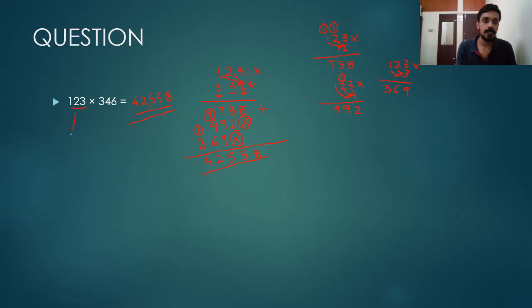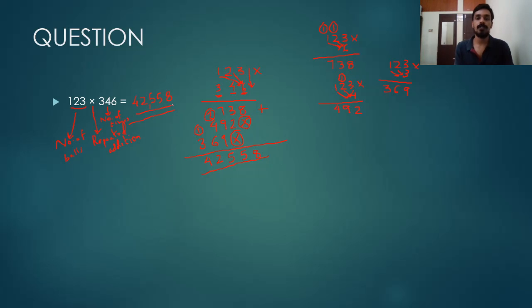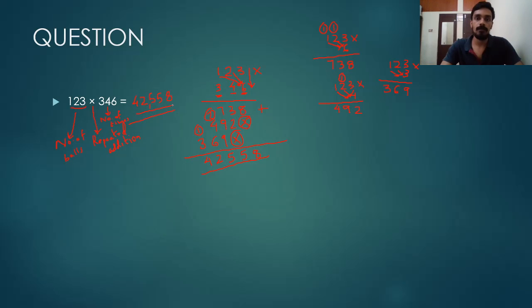So 123 is the number of balls. When we do repeated addition 346 times, we get 42,558. So 123 balls added 346 times gives a total of 42,558 balls. I hope everybody understood what multiplication is and how to do 1-digit, 2-digit, and 3-digit multiplication. If you have any doubts, please reach out to me. Thank you.